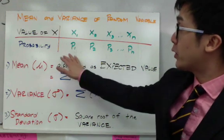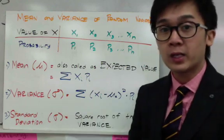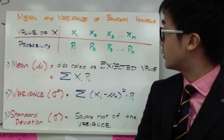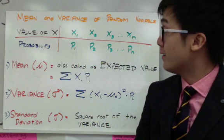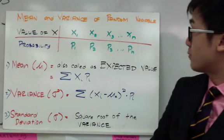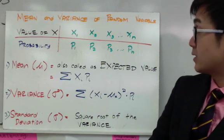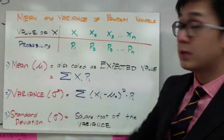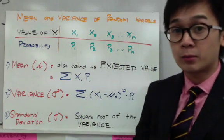I'm showing you a general form of a probability model. We have the value of x represented by x sub 1, x sub 2, x sub 3, up until x sub n. And the probability will be p sub 1, p sub 2, p sub 3, up until p sub n. The number of x's and p's that you will have in your probability model is dependent on the number of samples you have.